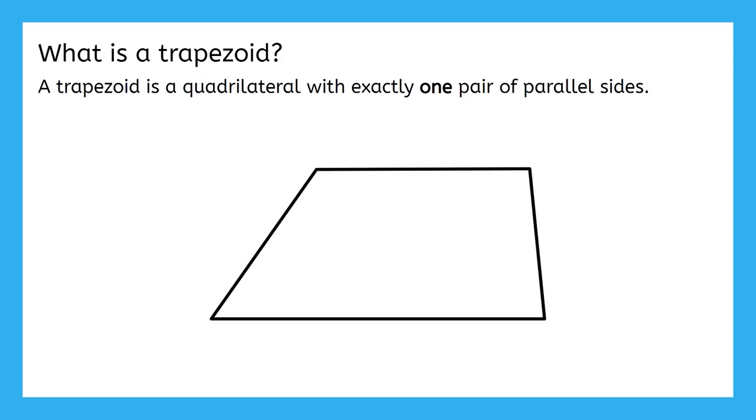Before we can do anything with trapezoids, we have to know what they are. A trapezoid is a quadrilateral with exactly one pair of parallel sides. That means that trapezoids look something like this. They still have four sides, but they're different from all of the other quadrilaterals that we've looked at so far, in that only one pair of their sides are parallel. These two sides would be my parallel ones in this case.